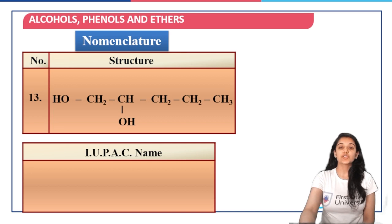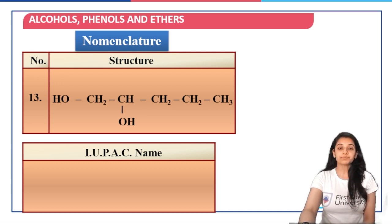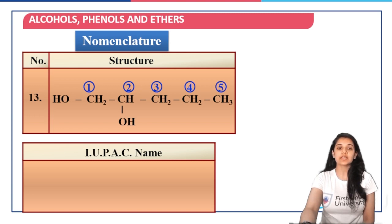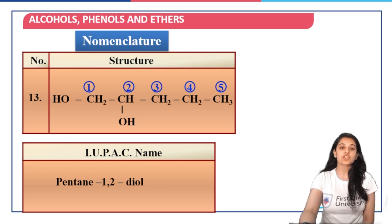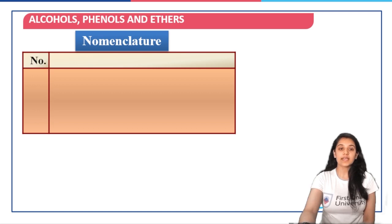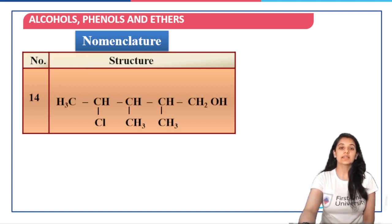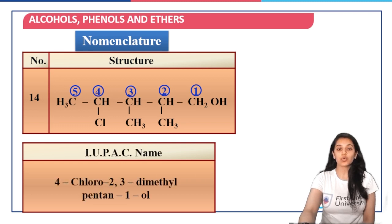Next question — pause the video here, write the IUPAC name, then match after resuming. You will name it by first identifying the parent chain, giving substituents the lowest number possible, then writing down the alphabetical ordered IUPAC name — so it's pentane-1,2-diol. When I see the next structure, the IUPAC name would be 4-chloro-2,3-dimethylpentane-1-ol.